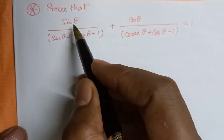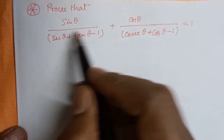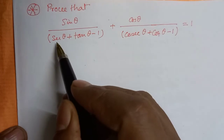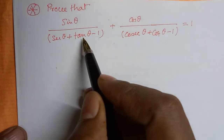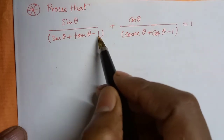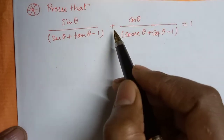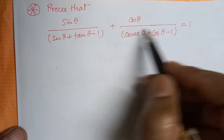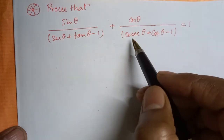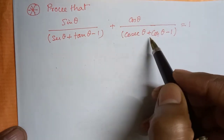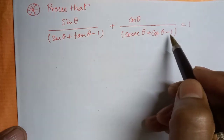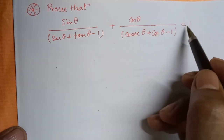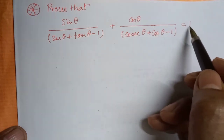Prove that sinθ/(secθ + tanθ - 1) + cosθ/(cosecθ + cotθ - 1) equals 0.